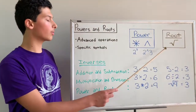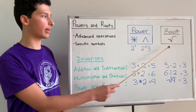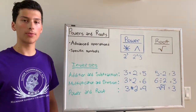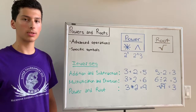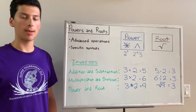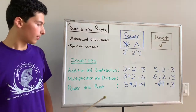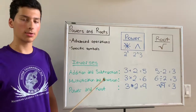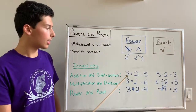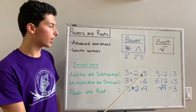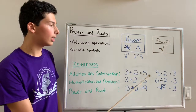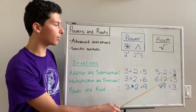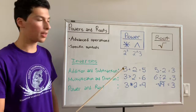The square root sign is just the regular root sign as seen in mathematics. Power and root are inverses, just like addition, subtraction, and multiplication and division. For example, addition and subtraction are inverses. If you look at 3 plus 2, that equals 5. If you take 5 and subtract 2 from it, you'd get 3, bringing you back to the original value.